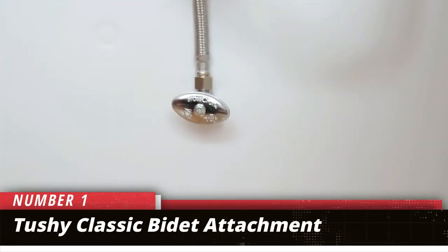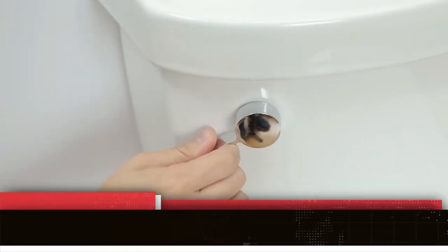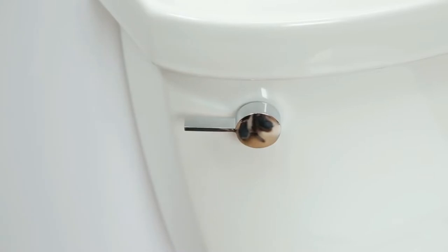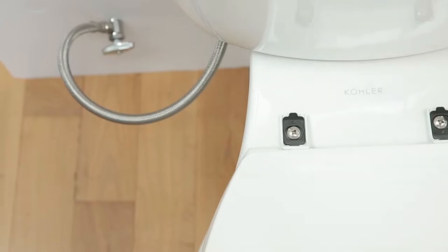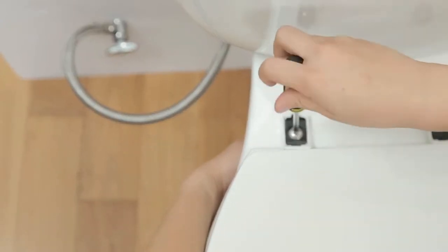Number 1. Tushy Classic Bidet Attachment. If you're not sure you're ready to invest in a full bidet seat, consider a bidet attachment. The Tushy installs under your seat in less than 10 minutes and works with all standard and most skirted toilets.